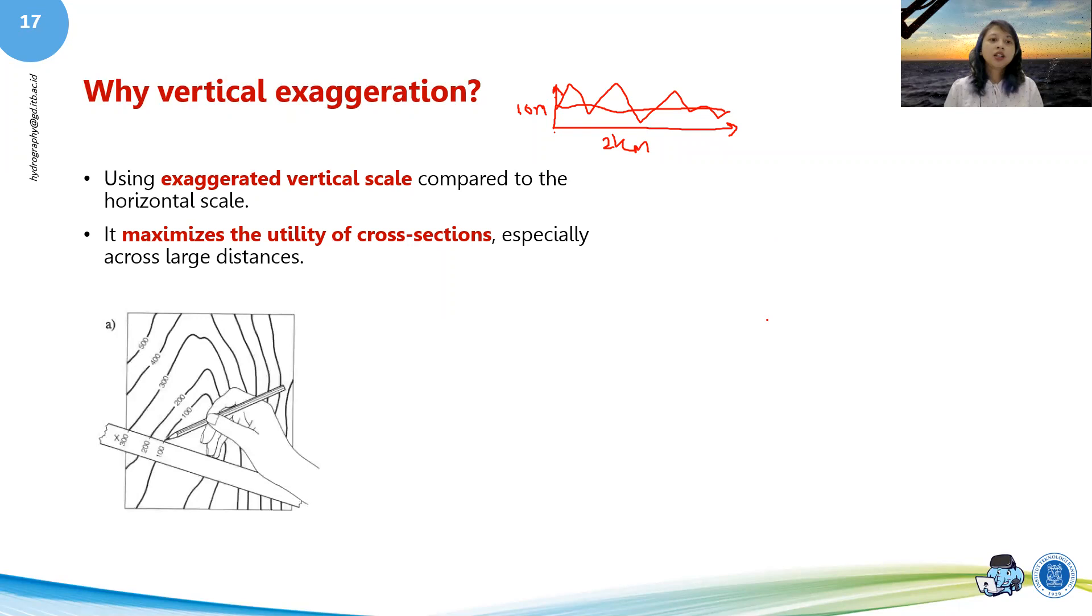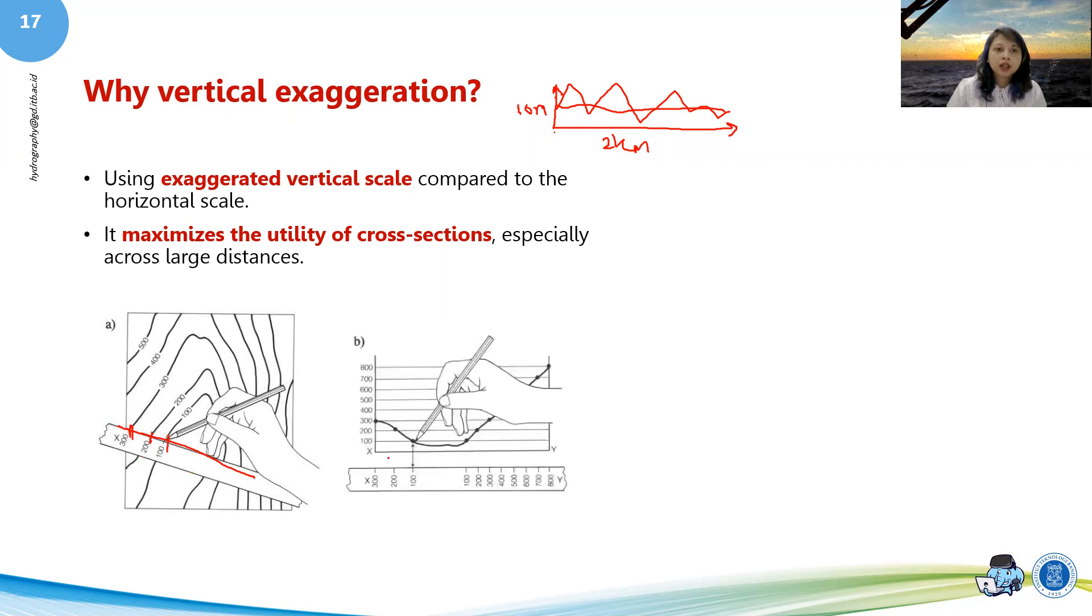So essentially what we're doing is if we're doing a cross profile, for example, around here, then essentially we're doing it. Okay, this one is 300. I mean the height, this is 200, and this is 100.